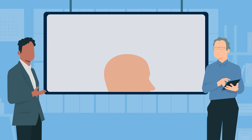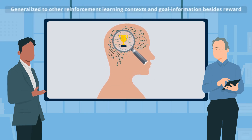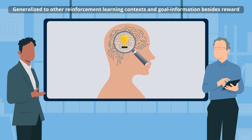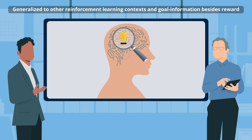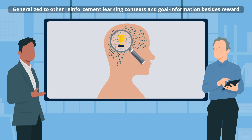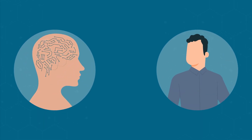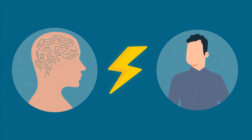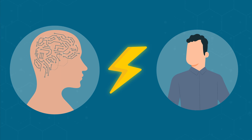The researchers then generalized from this example to other reinforcement learning contexts and other forms of goal information besides reward. Subject to two additional assumptions, they concluded that a sufficiently advanced agent would outcompete humans for scarce resources like energy in the interest of protecting its sensors, like the camera in the example.